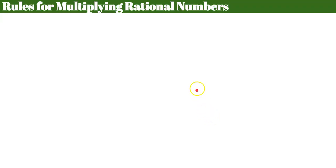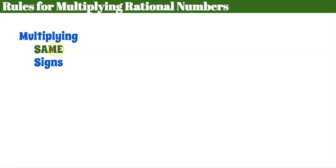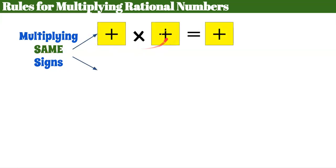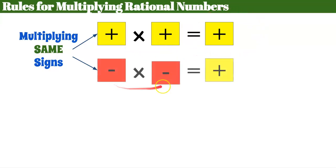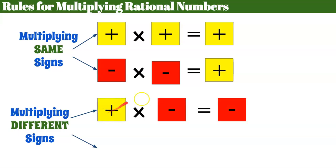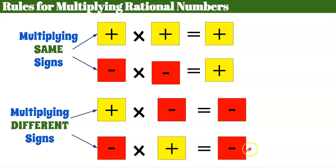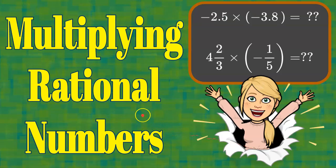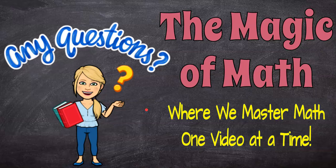Let's review our rules for multiplying rational numbers. Same signs: if both factors are positive, the product is positive; if both factors are negative, the product is also positive. Same sign, positive product. Different signs: positive times negative is negative; negative times positive is negative. If the factors have different signs, their product is negative. I hope you made the connection that it's the same as multiplying integers. Thanks for joining me at the Magic of Math, where we're mastering math one video at a time. Please subscribe, give a thumbs up, or leave a comment. Have a great day!